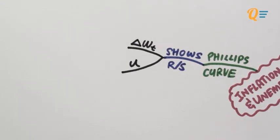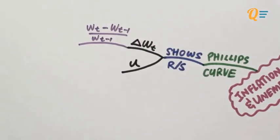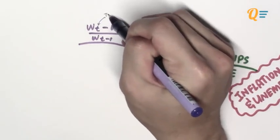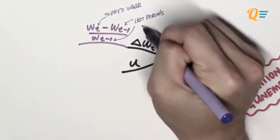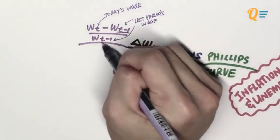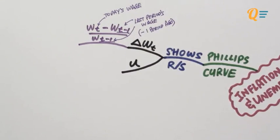Let me bring your attention to the rate of change in the nominal wage. Although it might seem obvious to some of you, this is how we actually calculate it. What you want to do is take the nominal wage of today and deduct last period's nominal wage, then divide by last period's nominal wage. T minus 1 here actually stands for one period ago. So if one period is a year, WT is this year's wage and WT minus 1 is last year's wage. It depends on how the statistics are being gathered — it could be a week or a month.